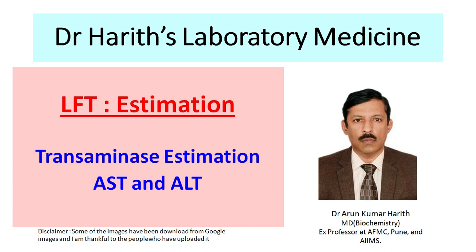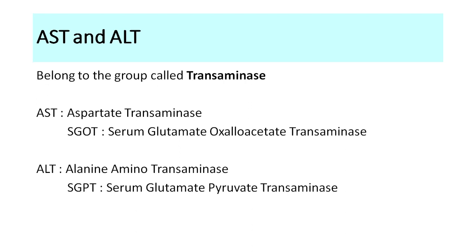Welcome to another lecture on laboratory medicine. In this lecture I'll be talking about transaminase estimation — how AST and ALT are estimated, as part of the liver function test. AST and ALT are enzymes belonging to the group called transaminase. AST used to be called SGOT (serum glutamate oxaloacetate transaminase) and ALT used to be called SGPT (serum glutamate pyruvate transaminase). These are very old names and should not be used nowadays.